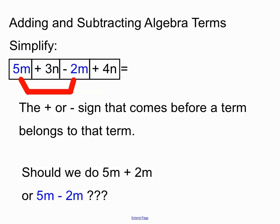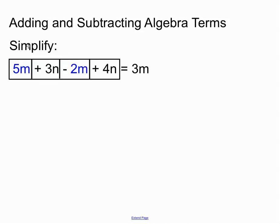So that means when we're joining up the 2m terms, we'd say to ourselves, 5m minus 2m, 5m minus 2m, because that minus belongs to that 2m term. So that'll allow us to do 5m minus 2m is 3m.